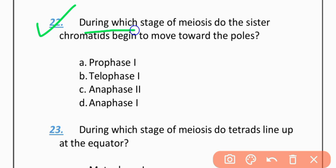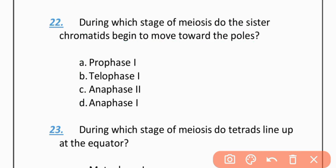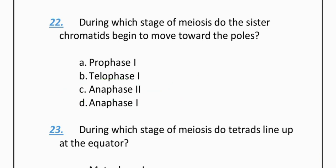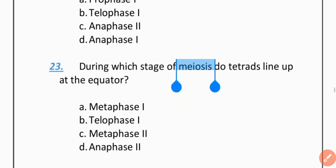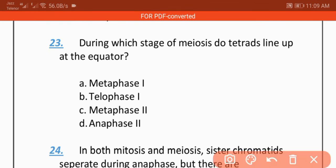MCQ 22: During which stage of meiosis do sister chromatids begin to move toward the poles? Options include Anaphase 1, Telophase 1, and Anaphase 2. The correct option is C — Anaphase 2.